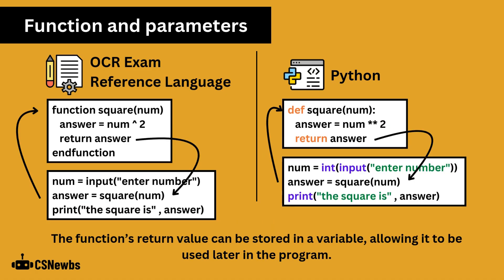The function's return value can be stored in a variable, allowing it to be used later in the program. In this example, the returned value is a variable named answer. Rather than print the square function when it is called, it is saved into a variable, also called answer, which is used in a print statement on the next line.